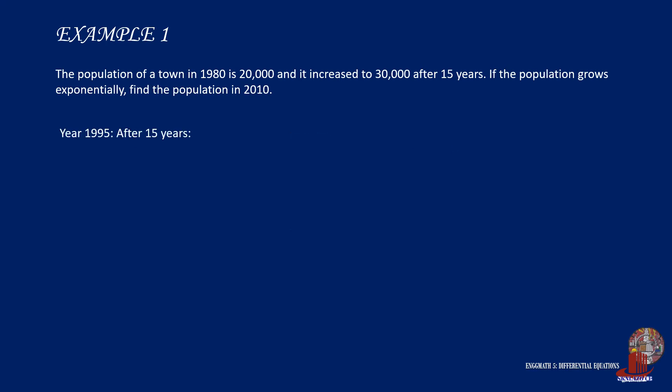In year 1995, or that is 15 years later, it was stated that the population grew to 30,000. So with the modified equation, plug the 30,000 for p and 15 for t. Simplify the equation by taking 20,000 to the other end, making it 1.5 is equal to e raised to 15k.